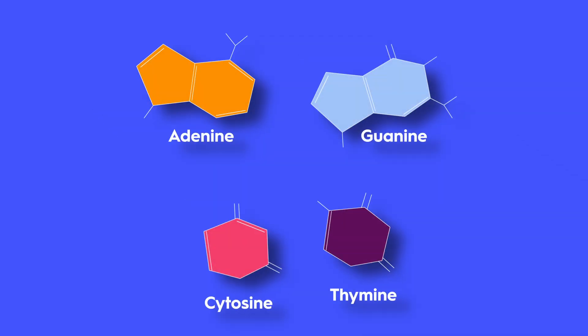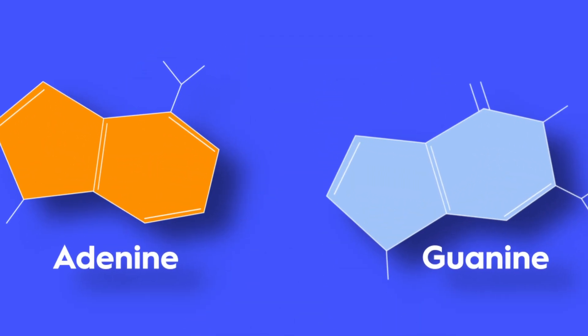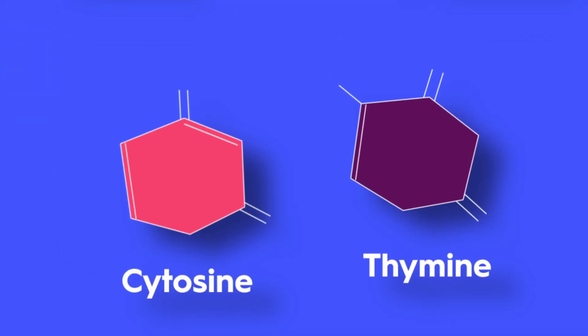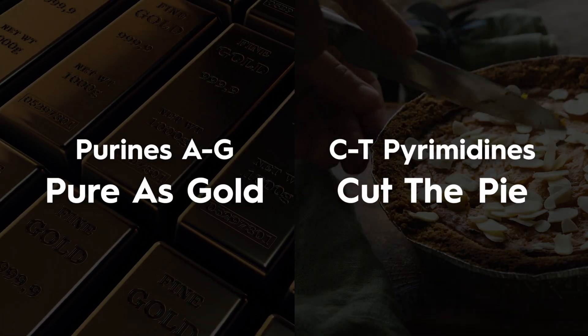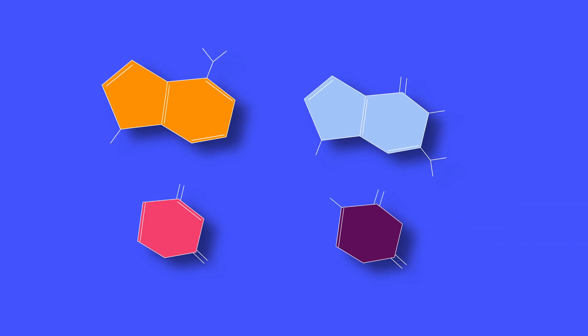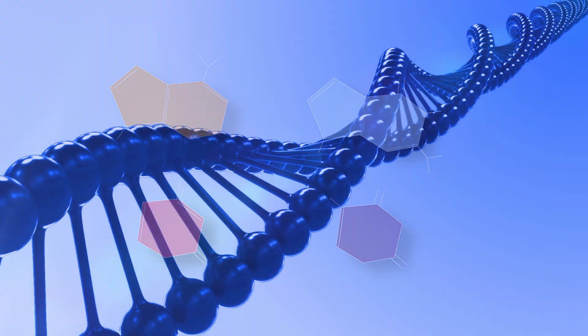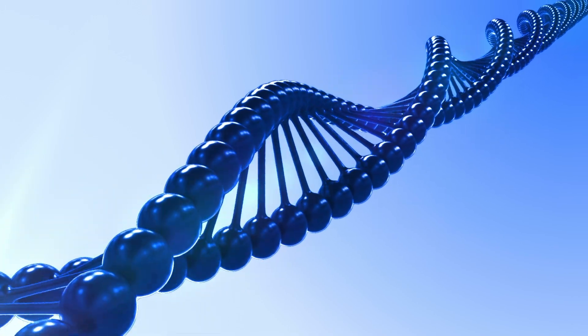Meet the cast. Adenine and guanine are two-ring purines, while cytosine and thymine are one-ring pyrimidines. Remember, pure as gold and cut the pie. Because a purine is wider than a pyrimidine, one of each must pair. Think big shoe meets small shoe on every rung, keeping the DNA ladder evenly spaced.